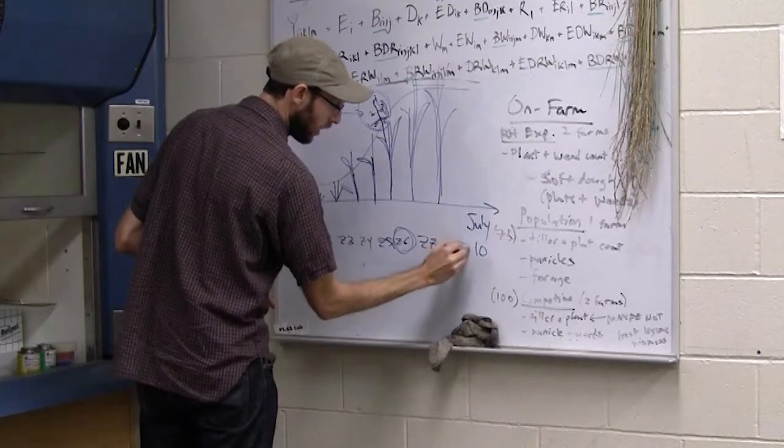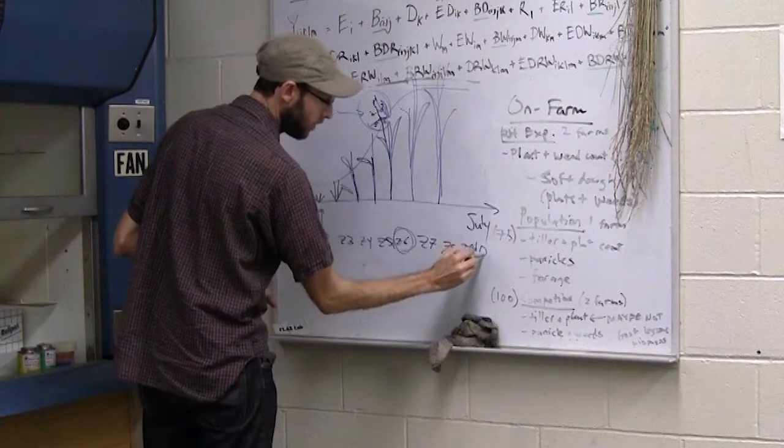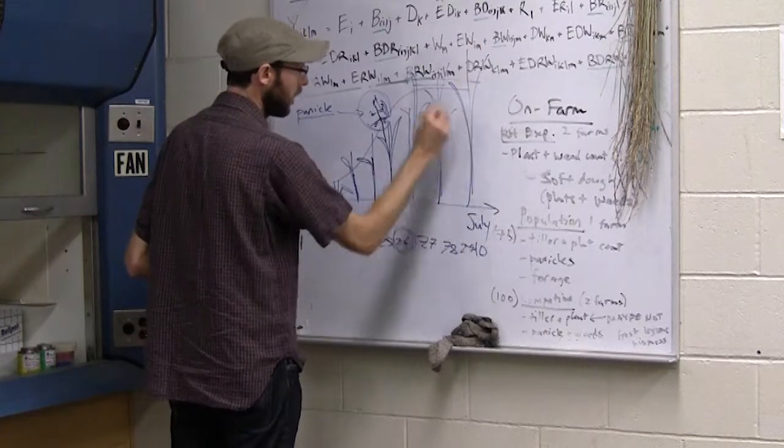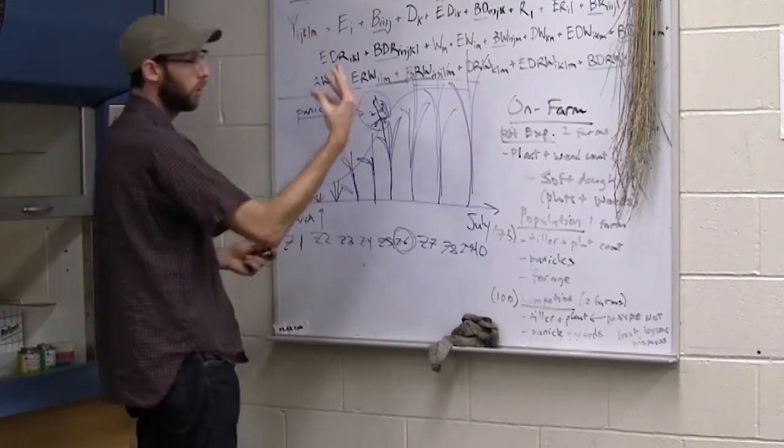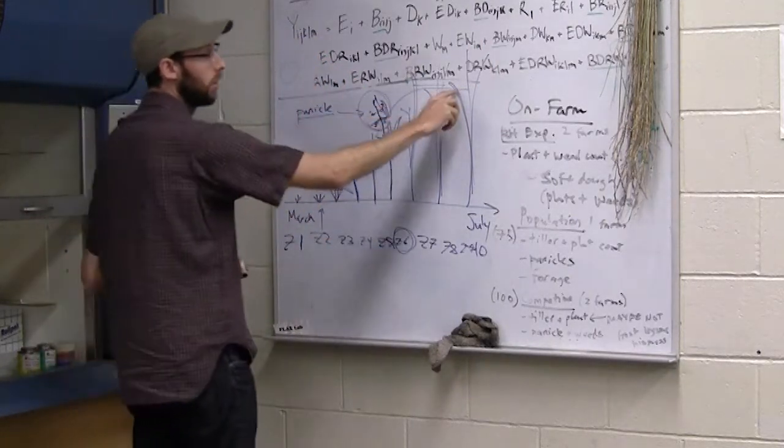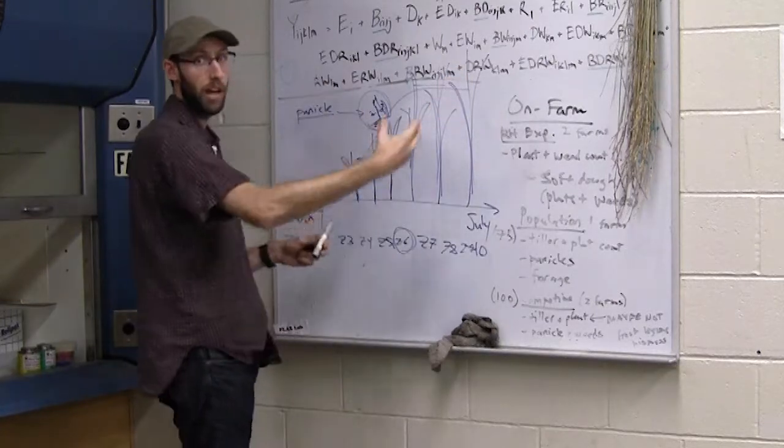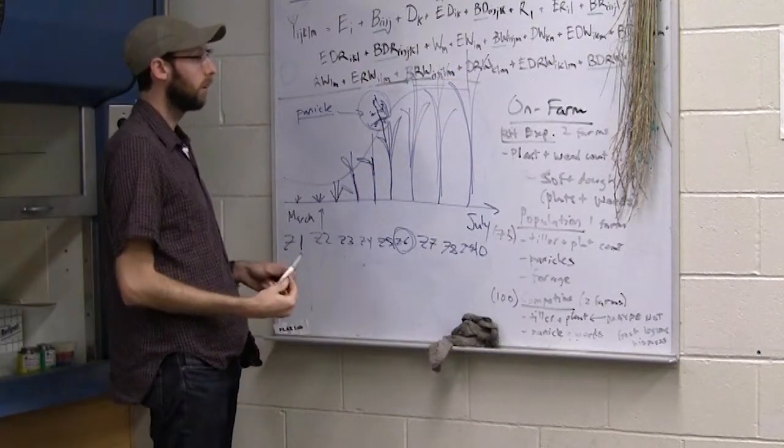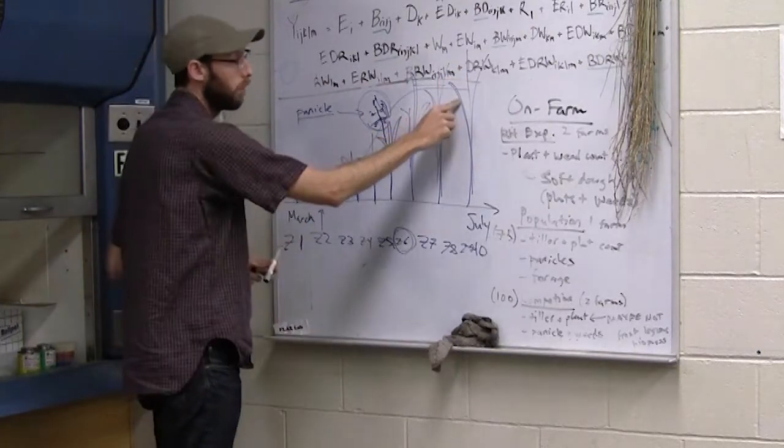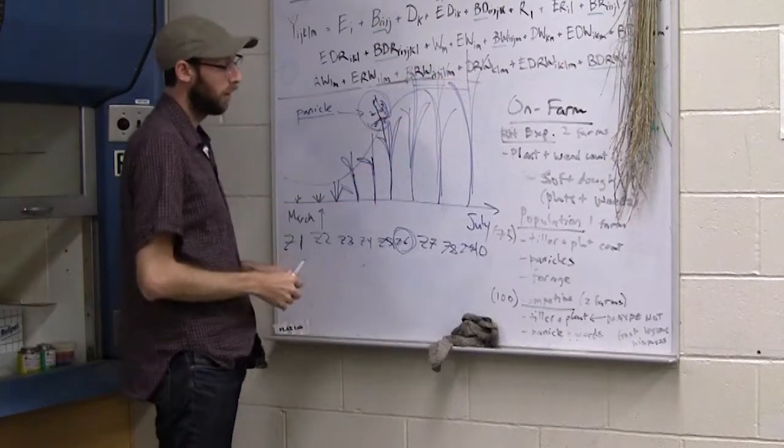And then once we get to Z9, between Z9 and Z10, again, the plant's at the same height. All it's doing is that kernel is drying down. The leaves of the plant are starting to senesce or die and dry down. They're moving those last nutrients from the leaves into that seed head.